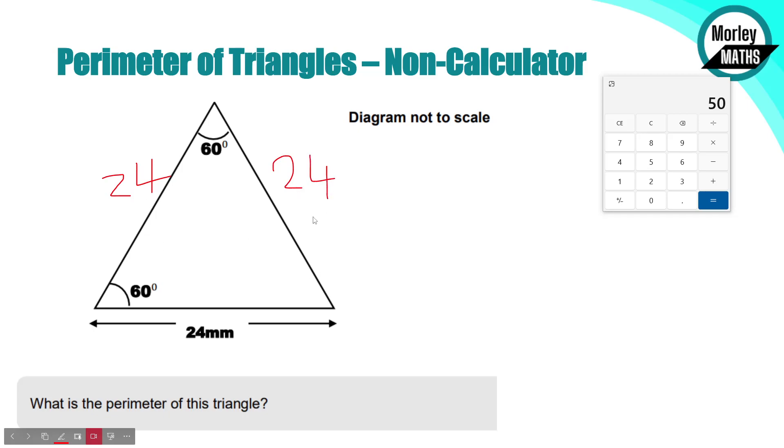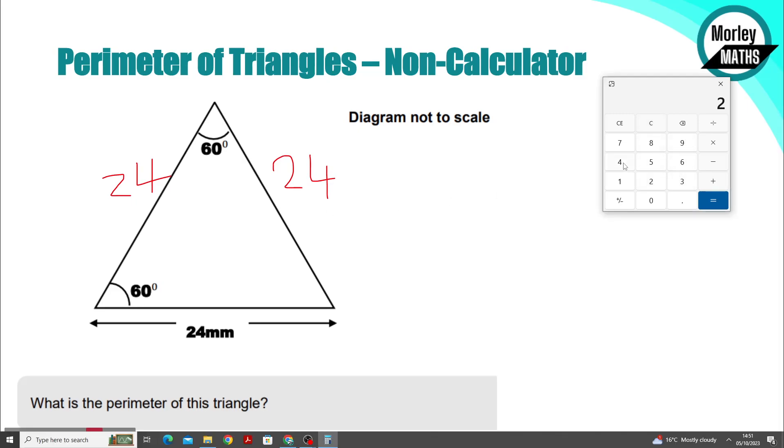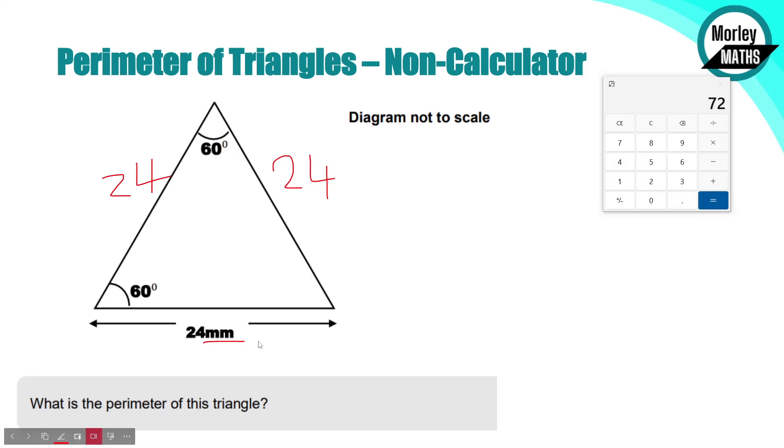So we have 24 and 24. You can just add those together three times or just times 24 by 3. We'll just add them together to give you 72 millimeters. It's in millimeters as per the base measurement there.